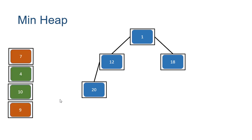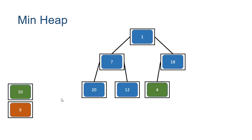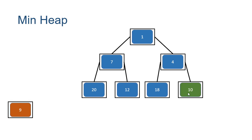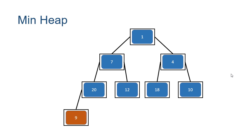Now we add the second column. We add 7: it's less than 12 so we swap them. Then we add 4 as the left child of 18, maintaining a complete tree. Since 4 is less than 18 we swap them. We add 10, which completes the last level, and since 10 is less than 4 it's in the correct location. Finally we add 9, starting a new level at the far left. Nine is less than 20 so we swap them, but nine is not less than seven, so seven stays above nine and our ordering is maintained.